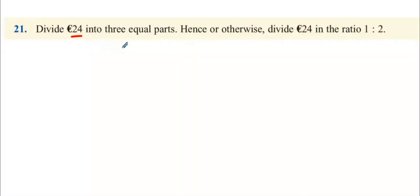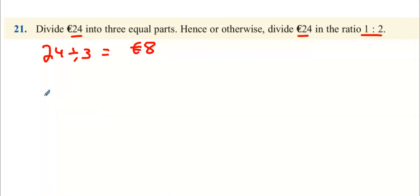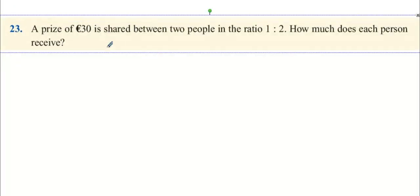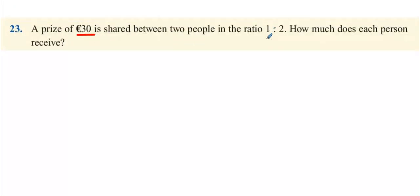Question 21: divide 24 into three equal parts — 24 divided by three is eight euro. Hence, divide 24 in the ratio one to two. Add one and two together to get three parts. If one part is eight euro, two parts will be 16 euro. So it's the same as eight euro and 16 euro.